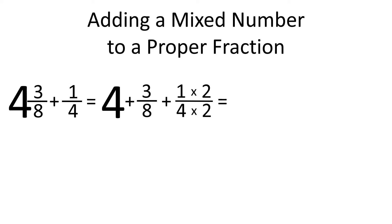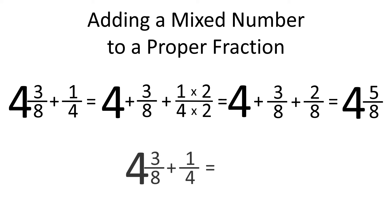That way we have 4 plus 3 eighths plus 2 eighths. And that is equal to 4 and 5 eighths. So, 4 and 3 eighths plus 1 fourth equals 4 and 5 eighths.